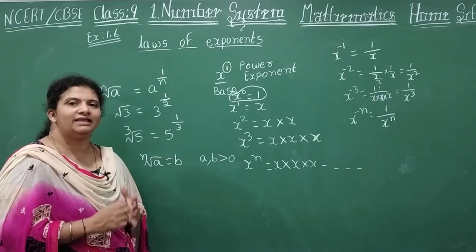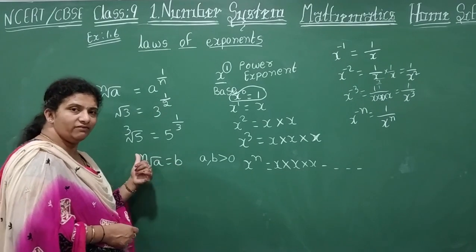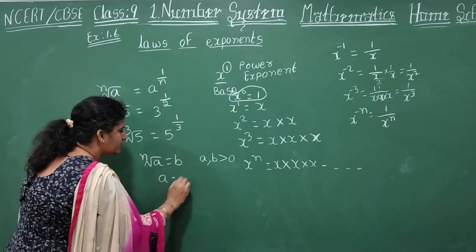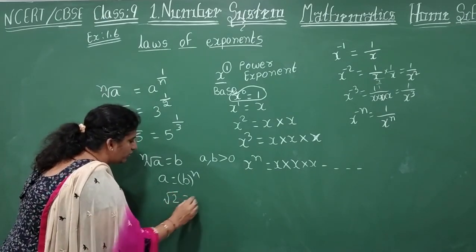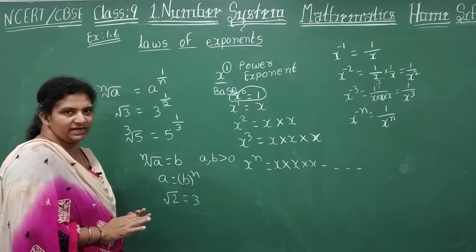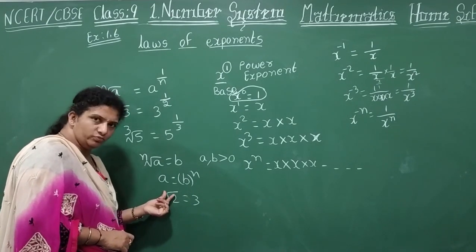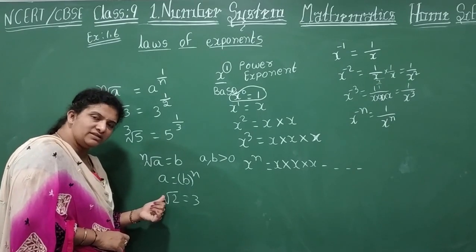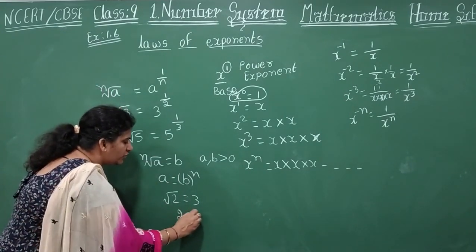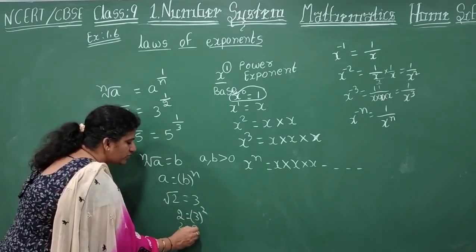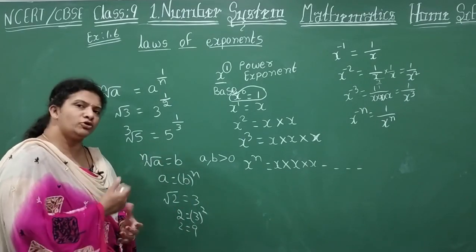So if nth root a equals b, and you want to remove this root, you apply whole to the power of n on both sides, giving a equal to b power n. For example: root 2 equal to 3 — how do you remove the root? The n value is 2 for square root, so you send the square root to the other side as whole to the power 2: 2 equal to 3 whole square, that is 2 equal to 9. This is the way we convert roots into squares or squares into roots.